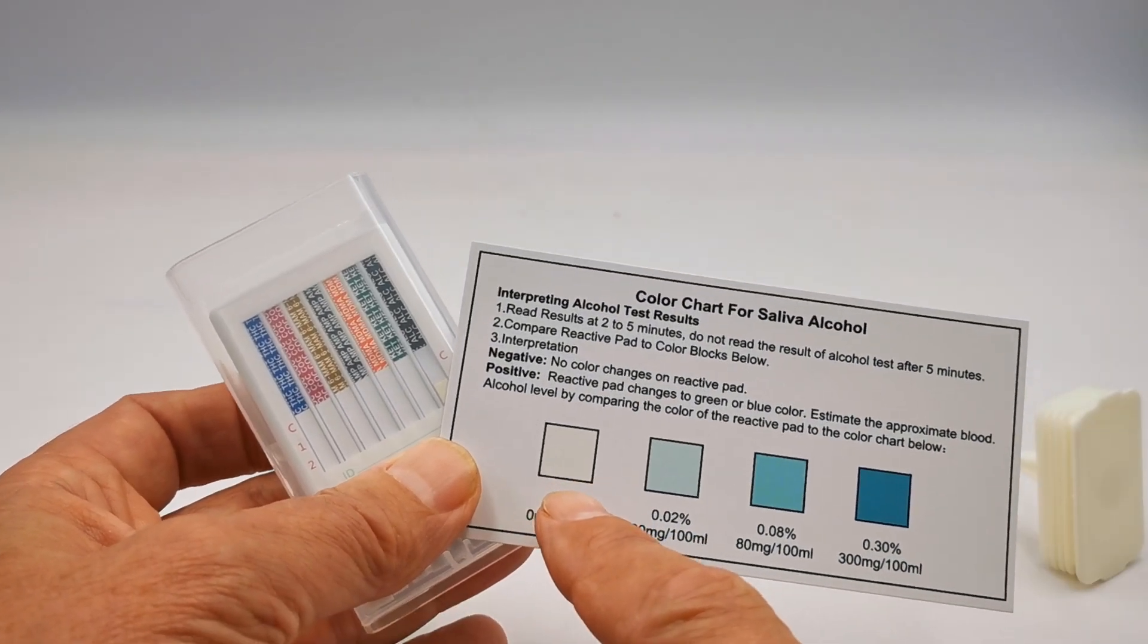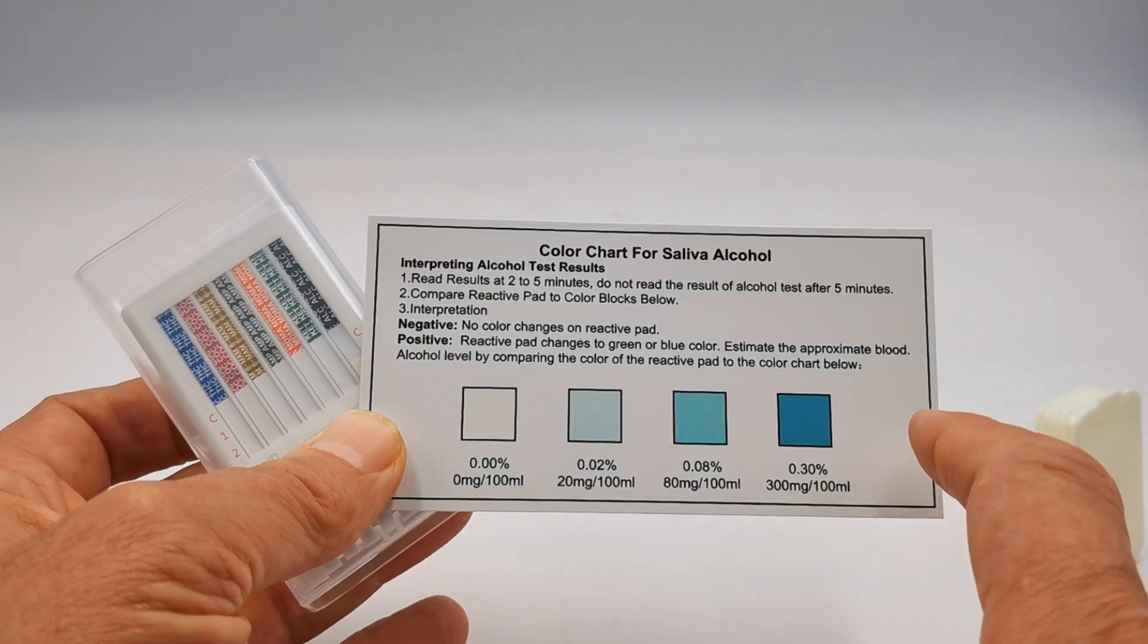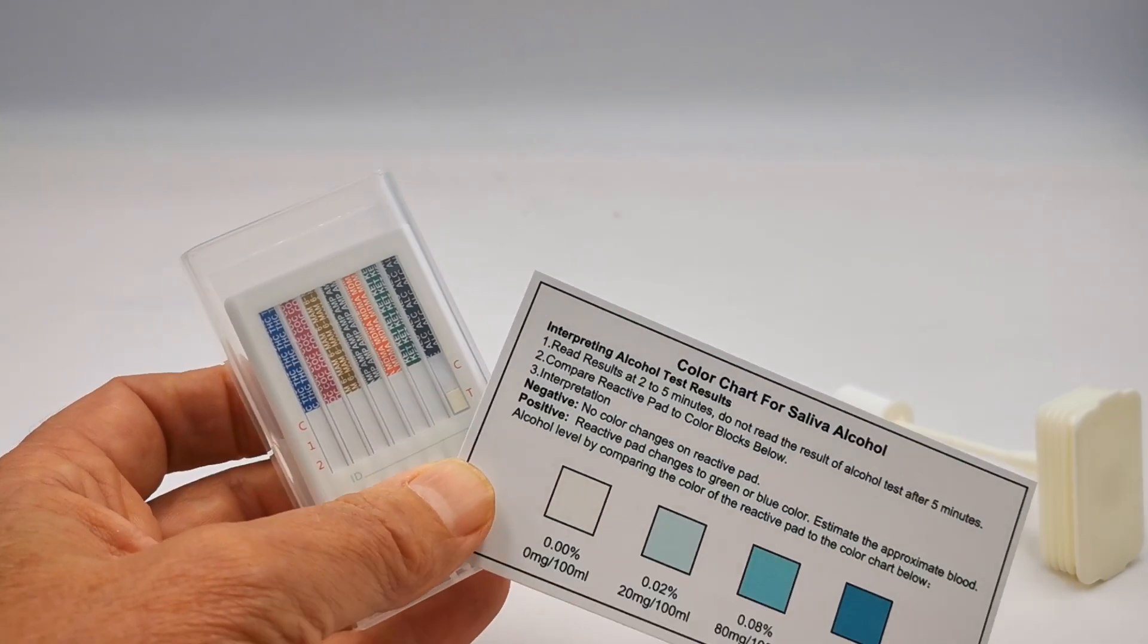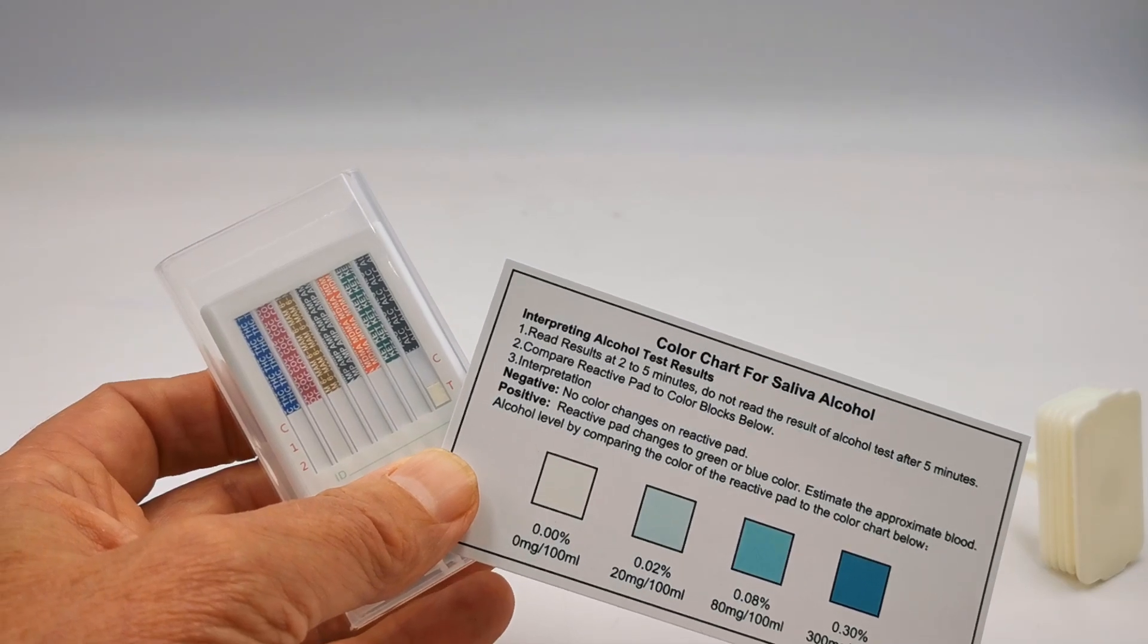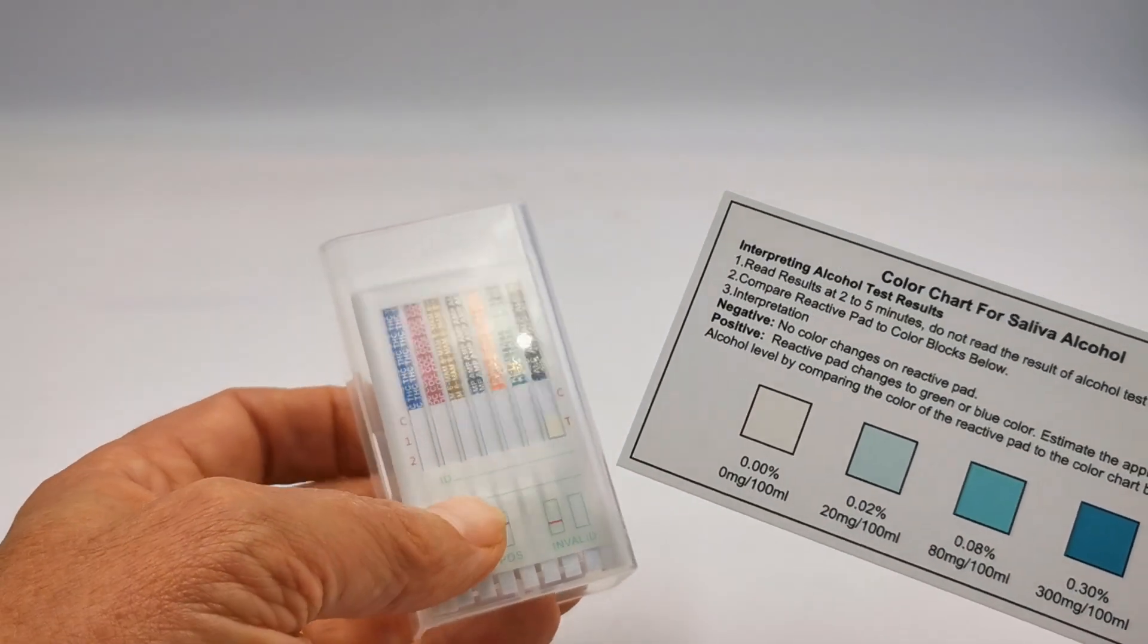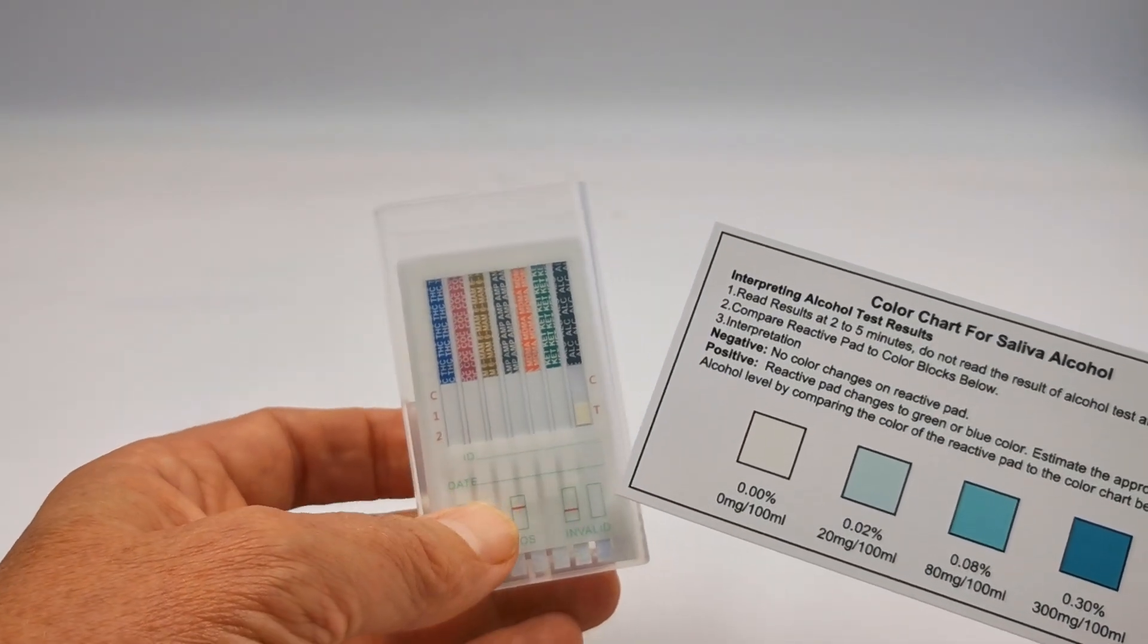If there is saliva alcohol present, you will get a degraded or increasingly strong blue color developing on that pad within two minutes, and that can be read from between two to five minutes. It will fix and can be read as late as eight to ten minutes.